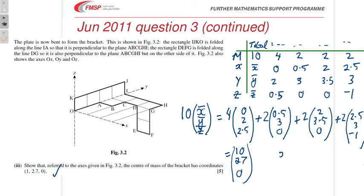Which gives us what they require. Here, x-bar is 1, y-bar is 2.7, and z-bar is 0. Right, five marks for that part.